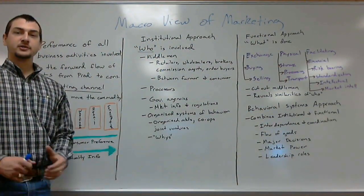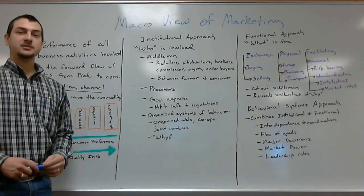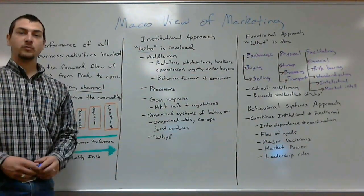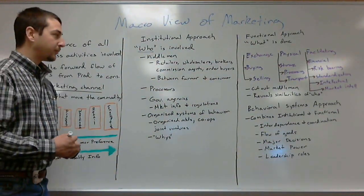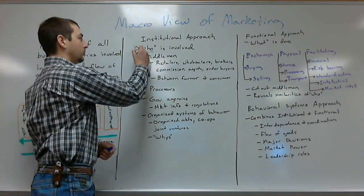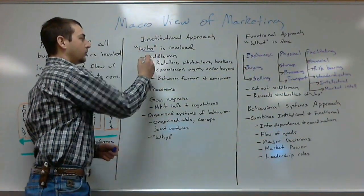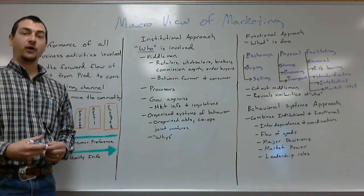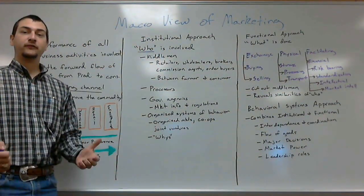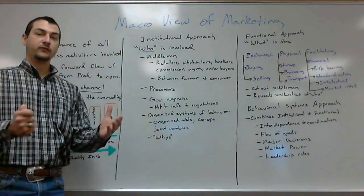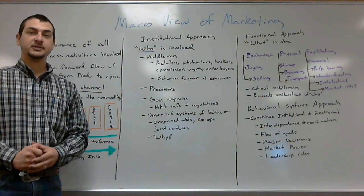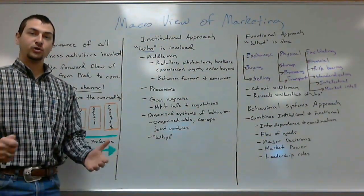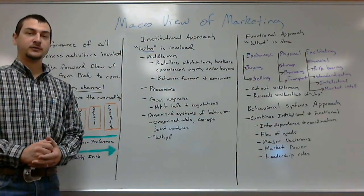Whenever we start talking about the institutional approach, I want you to remember one word — WHO. Who are these institutions that are involved in the forward flow of goods and services from the producer to the consumer? Who is involved?